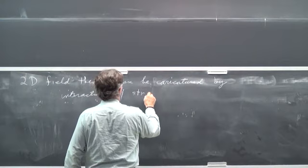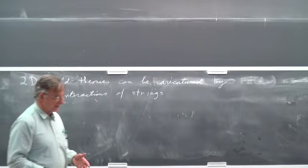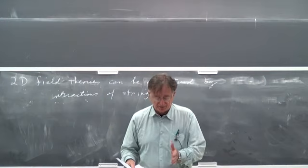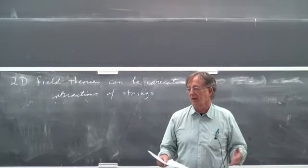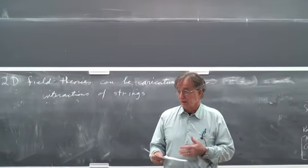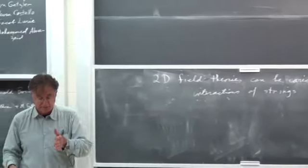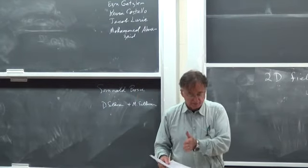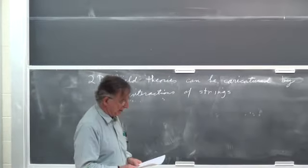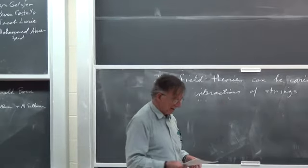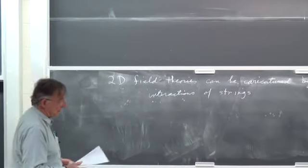I'll just put up here 'strings,' because if you have a 2D field theory even in its extended form, we have boundaries that are either circles or arcs, and then we have surfaces. You're supposed to describe algebraic structures, functors, and so on, on surfaces whose boundaries are circles and arcs. You can think of the circles and arcs as being swept out through the surface, and as they go through the surface they interact and come out the other end.